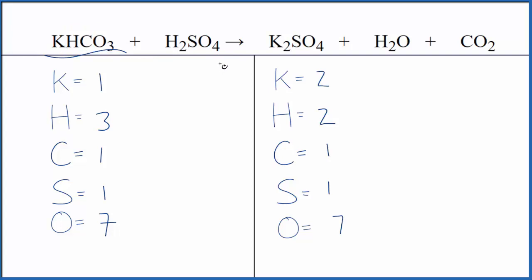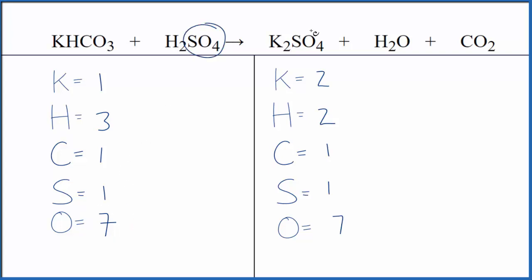I've already counted the atoms up here. Be careful when you count the hydrogens — you have one here and two here, so we have a total of three hydrogens. For the oxygens, we have three plus four, seven of those. Note that we do have a polyatomic ion. Sometimes it's helpful to count it as just one thing, but here it was easier to count the atoms individually. You get the same answer either way.